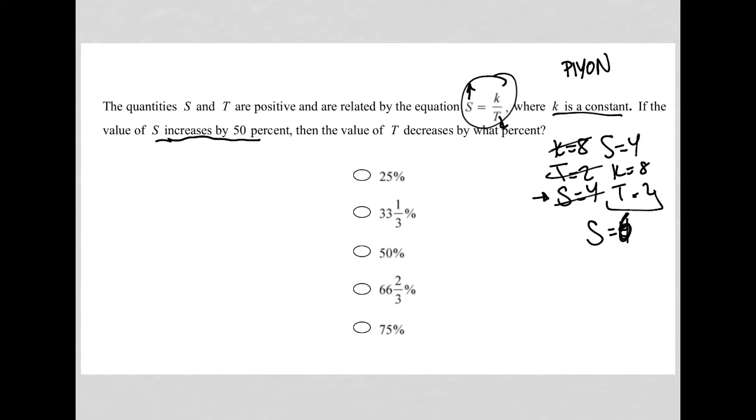So from 4 becomes 6. Again, the question told us that K is a constant. So if it was 8 up above, it remains 8 here. And then T is what I'm looking for.